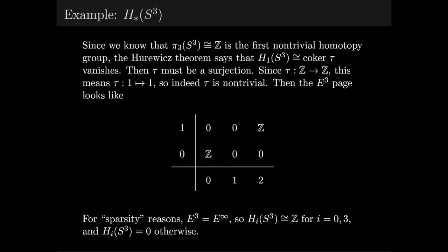This tells us that the E³ page looks like this. For sparsity reasons, E³ equals E^∞. Sparsity reasons refers to the fact that differentials on further pages will overshoot any of the entries, so all of the differentials will be trivial.